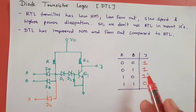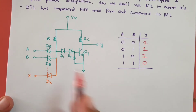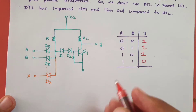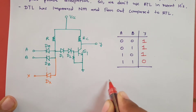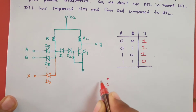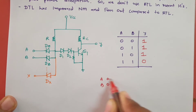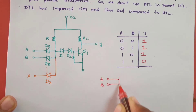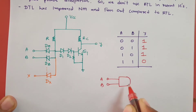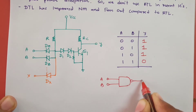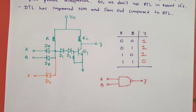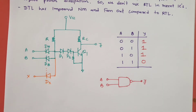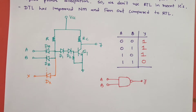This truth table confirms that the circuit is a NAND gate. Its symbol shows inputs A and B feeding into the NAND gate with output Y. This is the basic truth table for the DTL NAND gate.